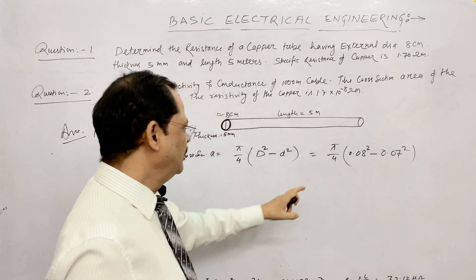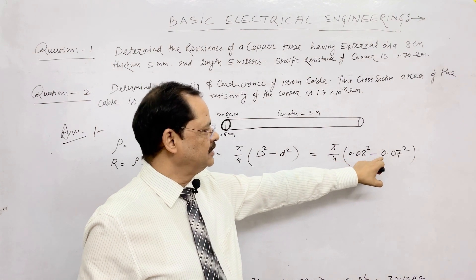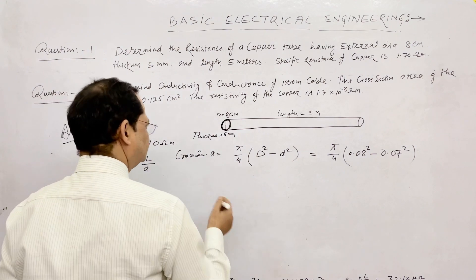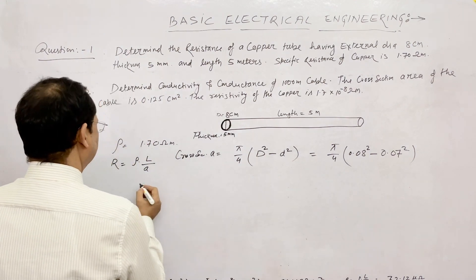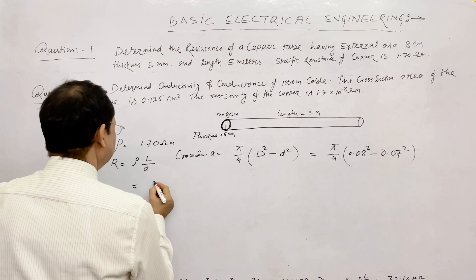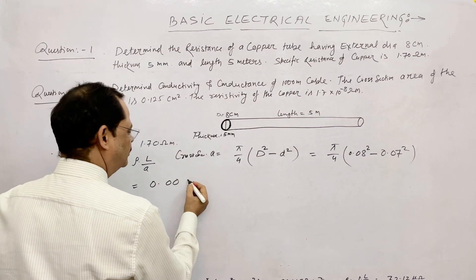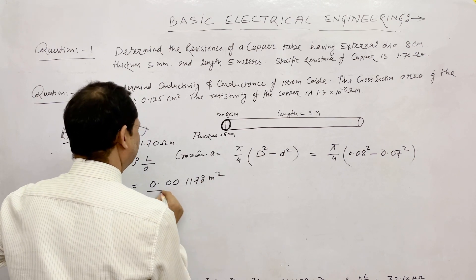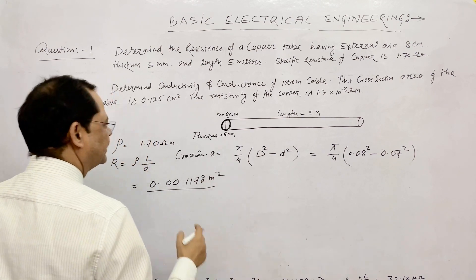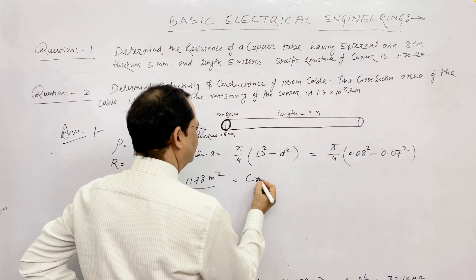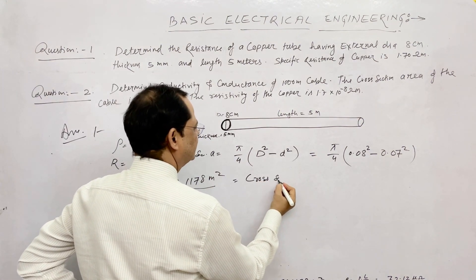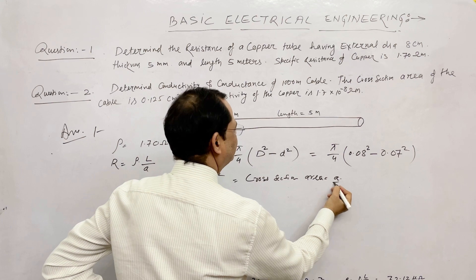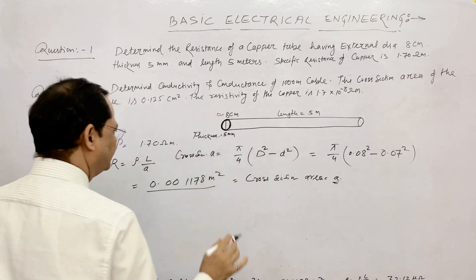Now solving: A = pi/4 × (0.08² − 0.07²). When you calculate this, the cross-section area comes out to 0.001178 meter square. So A = 0.001178 m².